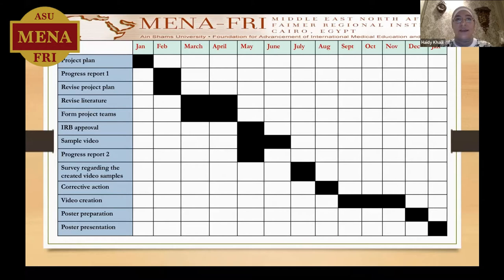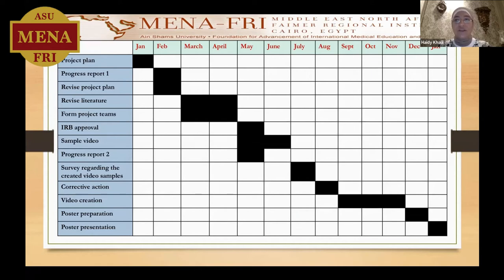For forming the project teams, I had two plans. Plan A was an official video creation team supported from the Faculty of Fine Arts at Hilouan University, and a team from students engaged with this. I worked on IRB approval, then a sample video was created. Progress report 2 was in May, and in May there was sample video creation. I planned to conduct a survey for students regarding the created video samples.